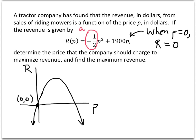And now maybe it makes more sense that they're asking us to figure out what price would maximize the revenue. We can tell that this point right here is going to be the biggest revenue we could ever get. And the way that we're going to get that revenue is by charging this mysterious price. If we can figure out what that price should be, we're going to figure out how to get the most money out of our riding mowers.